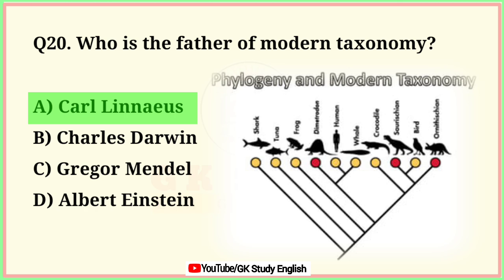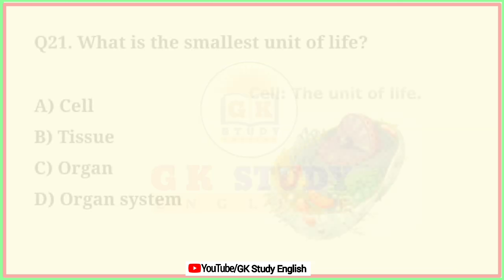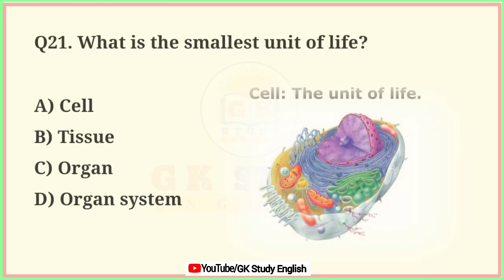Question number 21. What is the smallest unit of life? A. Cell. B. Tissue. C. Organ. D. Organ system. Correct answer is option A. Cell.